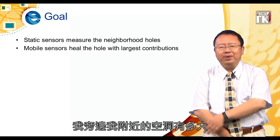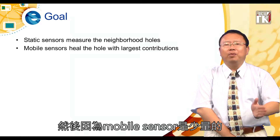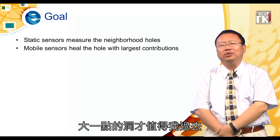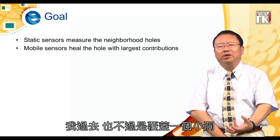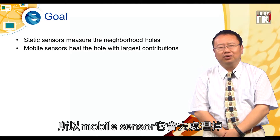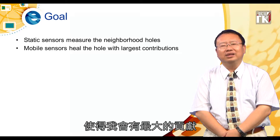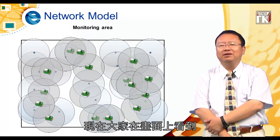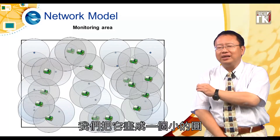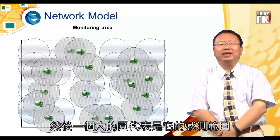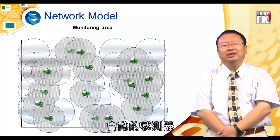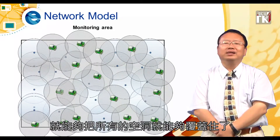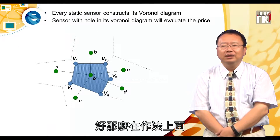这篇论文的目标是说Static Sensor可以衡量附近的空洞有多大，然后因为Mobile Sensor是少量的，当要叫Mobile Sensor过来的时候，Mobile Sensor会自己判断，大一点的洞才值得过去，太小的洞让我跑了这么远却只覆盖一个小洞，对我来讲是杀鸡用牛刀。所以Mobile Sensor会处理能使自己有最大贡献的空洞。情境是有一些不会动的Sensor画成小圆，大圆代表感测范围，另外有少量的会动感测器（车子），希望它们移动后能把空洞覆盖住。